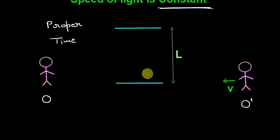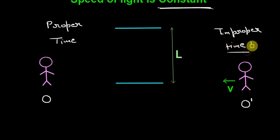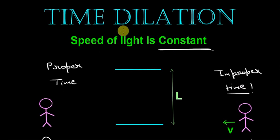These mirrors are moving with respect to observer O dash, and whatever this observer measures is called improper time. Due to relativity, proper time and improper time are not the same for the same event, and that is simply called time dilation. We will derive this time dilation just by keeping the speed of light constant in this experiment and measuring it from both observers.